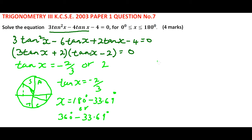Therefore, we get x = 146.31° or 326.31°. That is when tan x = −2/3.